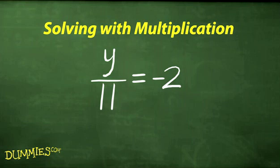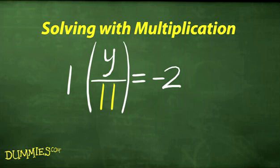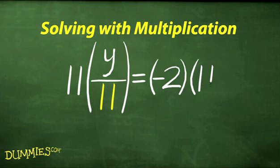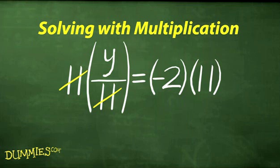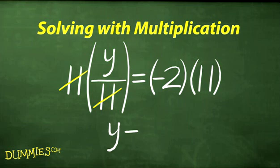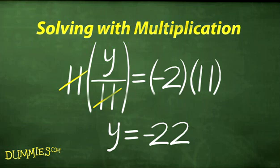Try solving for y in this equation. First, determine the value that divides the variable and multiply both sides by it. In this case, 11 divides the y, so that's what you multiply by. Then, once again reduce both sides of the equal sign and y equals negative 22.